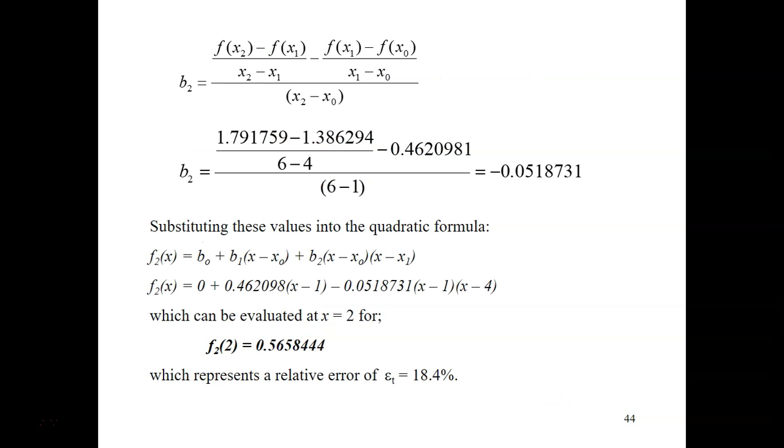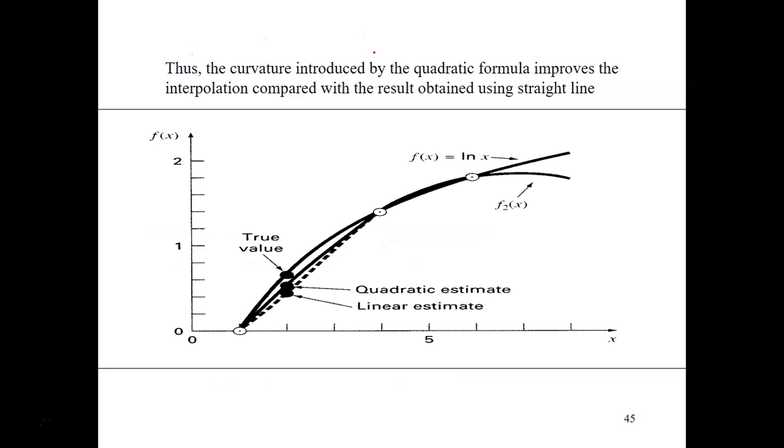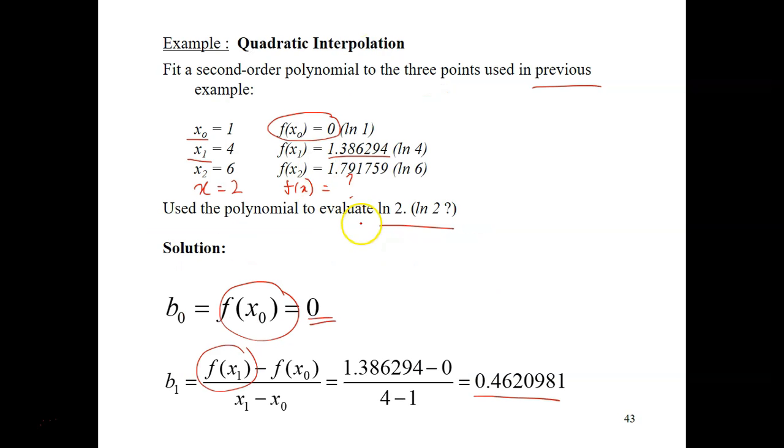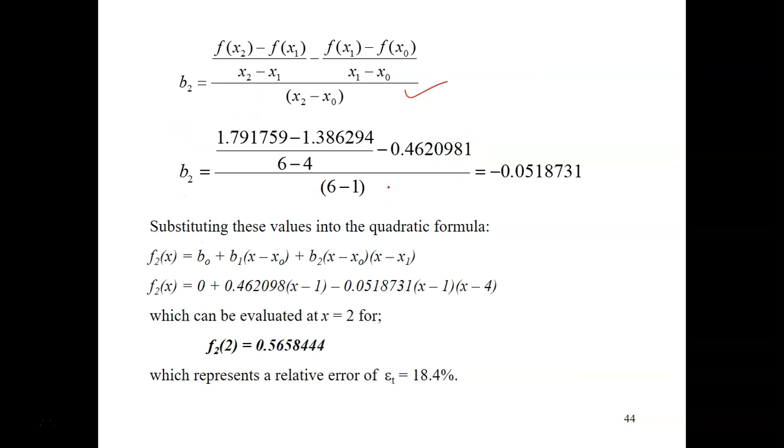And then, calculate for your b2 using this bulky formula here. Just substitute all these values inside. You can get all these values from here. From this. And you will get your b2 as negative 0.0518731.